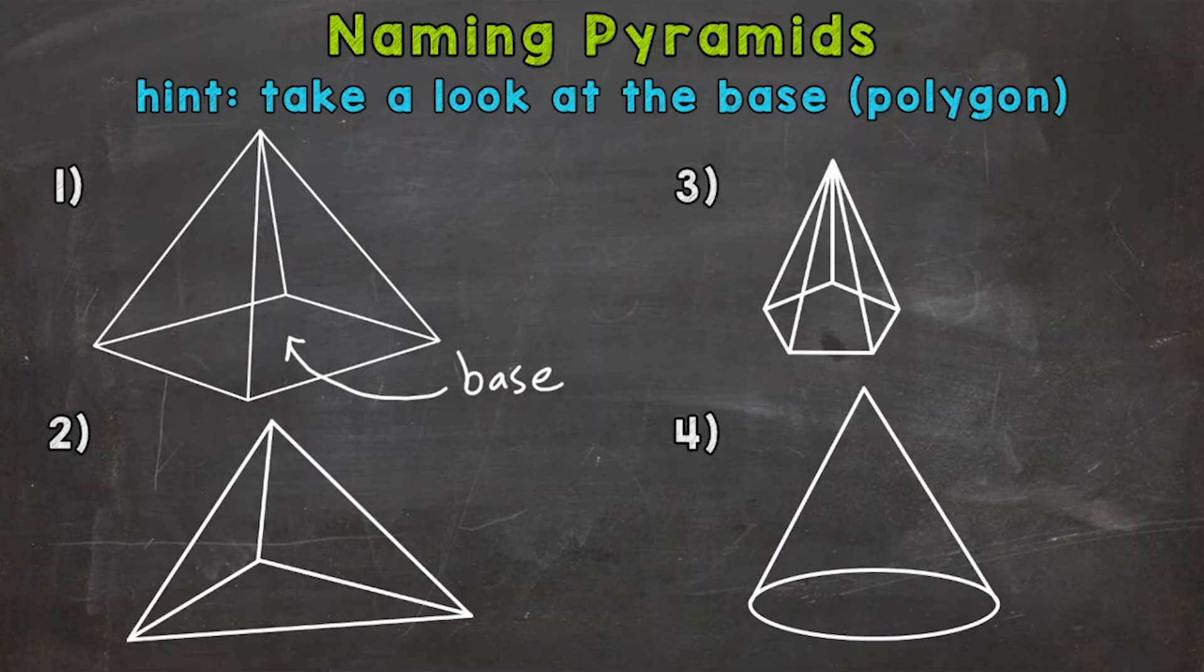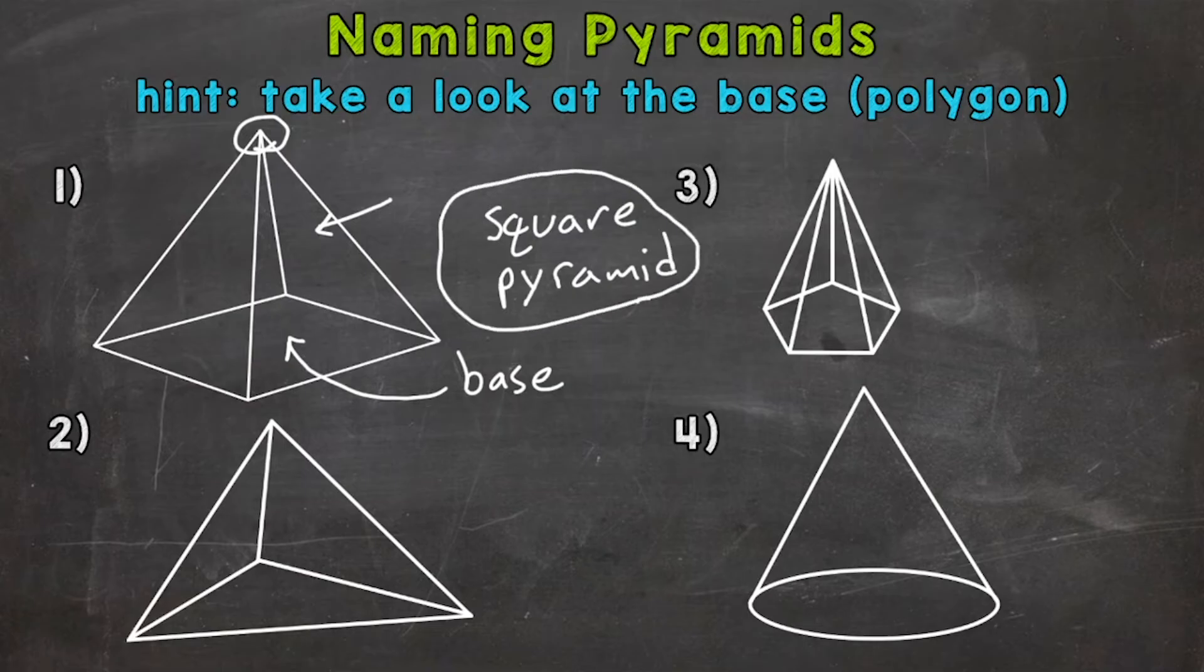at the apex. We name a pyramid based on the base, so whatever the base is, that's the specific pyramid. We have a square here, so for number one, we have a square pyramid.